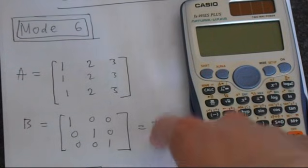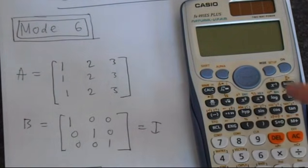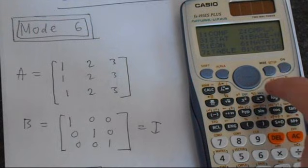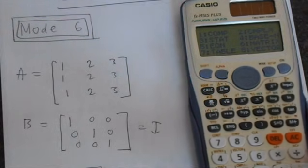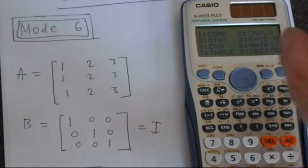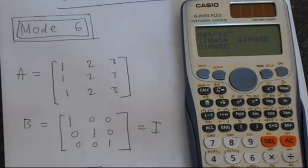To access the matrix mode, we press mode. And then we select option 6, which has helpfully written matrix next to it.